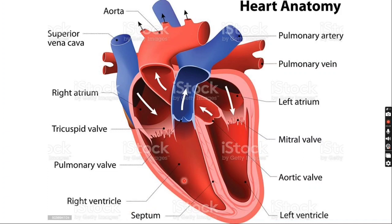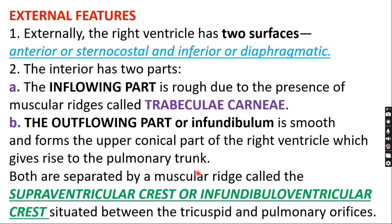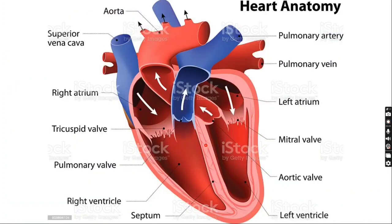Coming to the external features: the right ventricle has two surfaces. One is the anterior surface, and the other is the inferior surface — otherwise known as the diaphragmatic surface. The anterior surface makes a part, and the inferior surface also makes a part.